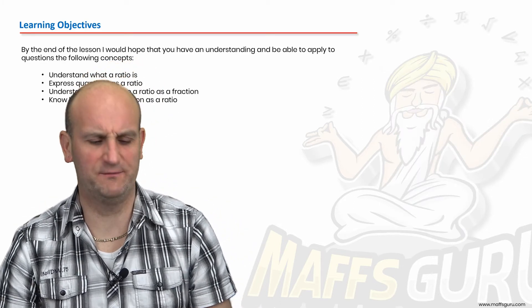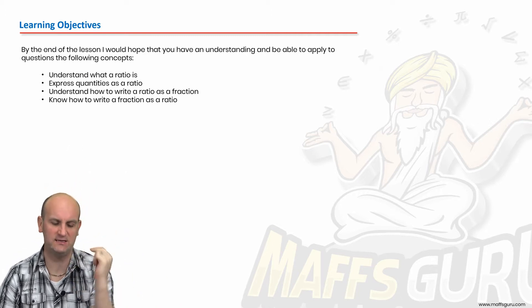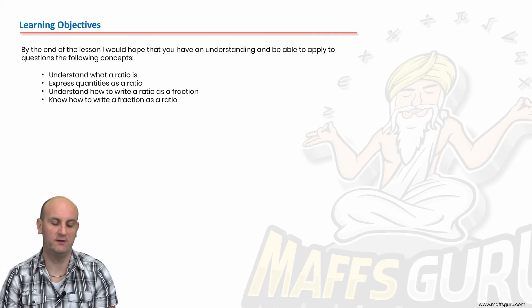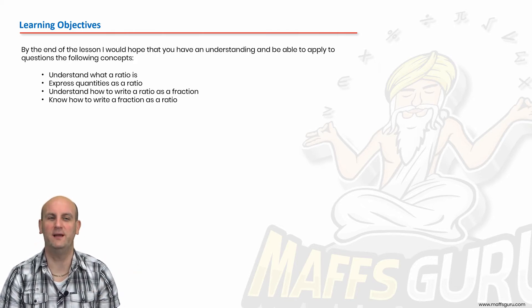I try and make maths as interesting and as humorous as I possibly can to take away from the dull monotonous stuff that comes up a bit later on. So learning objectives. By the end we're gonna know what a ratio is, express quantities as ratios, and understand how to write a ratio as a fraction and how to write a fraction as a ratio. What we do forwards in maths we must be able to do backwards.